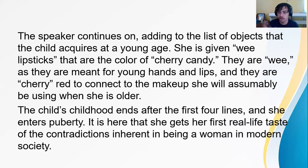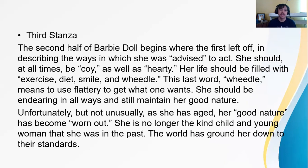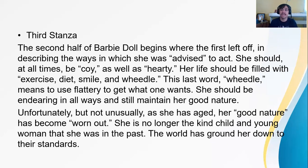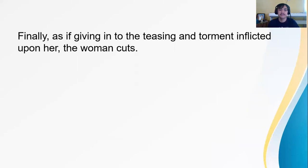Continuously, the poem talks about how Barbie dolls are given makeup, feeding into the child's perception of beauty in the third stanza. It also talks about how a girl is advised to be coy, hearty, exercise, diet, smile, and wheedle — basically telling her this is what she must do, and if she is other than this, she fails as a woman and does not fit the standard. The poem is making the point that we are too dictated by the things around us and society's standards.